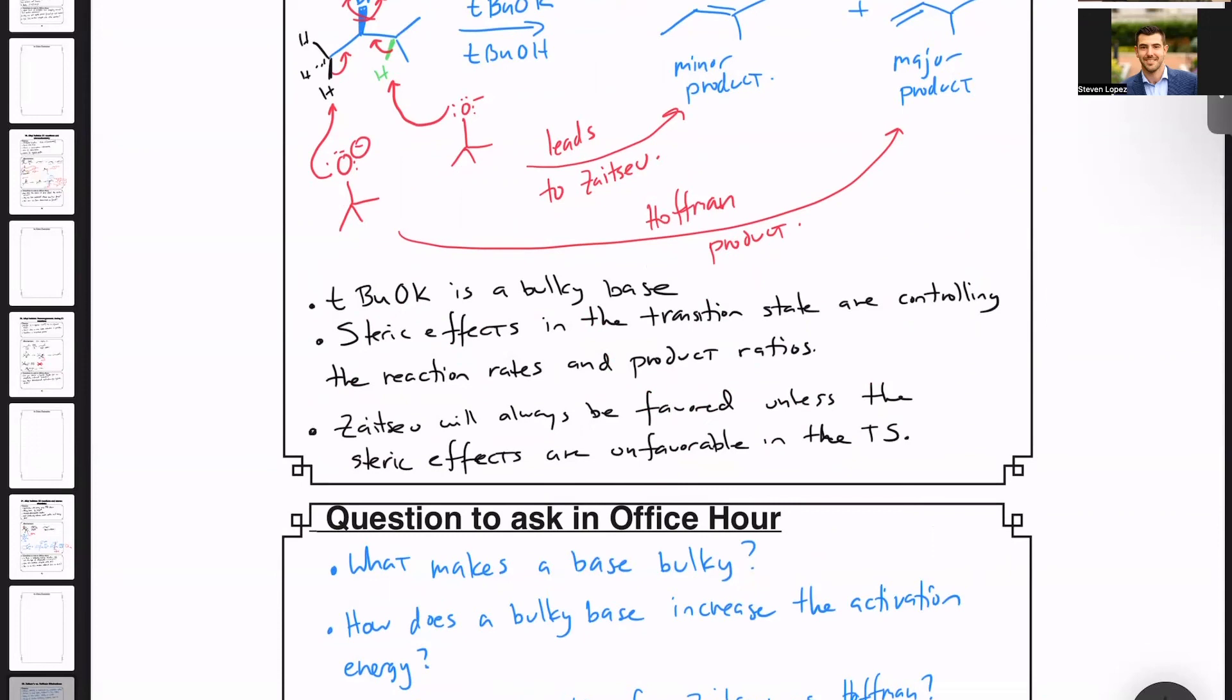Two, how does a bulky base increase the activation energy? Perhaps your instructor can draw this out on the board in 3D or show it using a computer program. And finally, can there be a tie for Zaitsev versus Hoffman products?